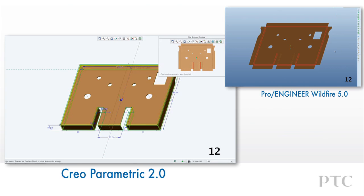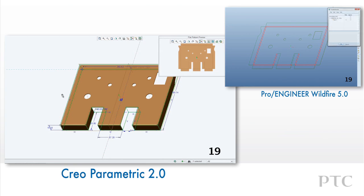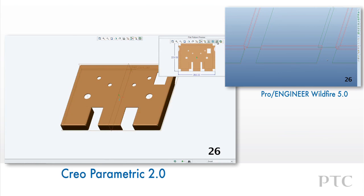This unfolds the sheet metal part in a sub-window and also allows us to preview overlapping geometry, highlighted in red. We can then modify the part in the form state without having to create unbend and bend back features. Another significant enhancement is the part bounding box measurements in the flat pattern preview.